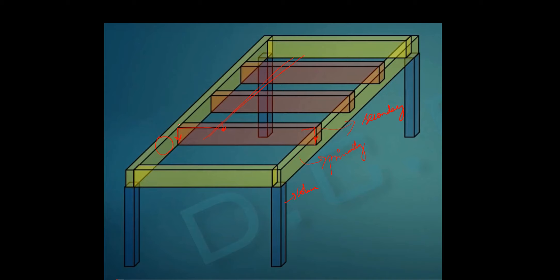The secondary beam produces a moment on the primary beam, which results in a twisting moment on the primary beam. We need to design the reinforcement to resist that twisting or torsion occurring in the primary beam — specifically the reinforcement required to resist this rotation due to the secondary beams.